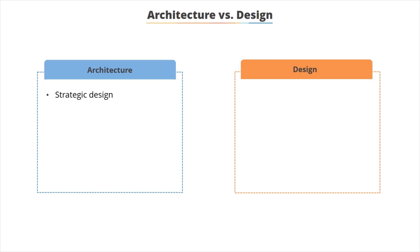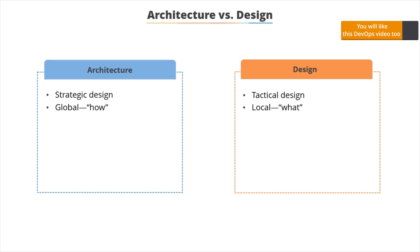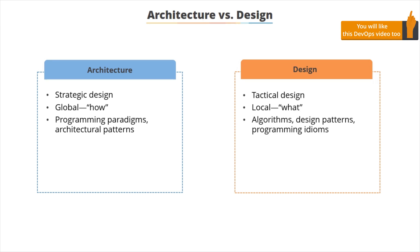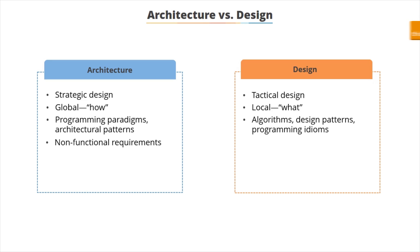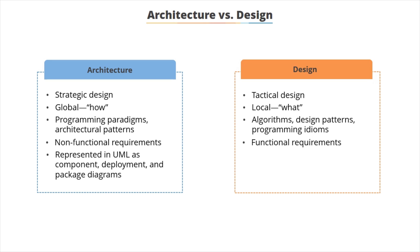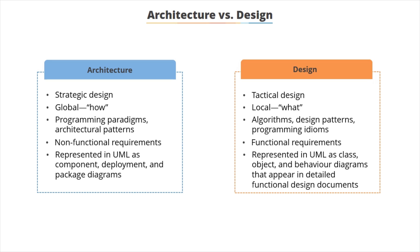Architecture is more strategic whereas design is tactical. The important word in architecture is 'how' — how do things fit together, rather than what do we use to connect things together? We look at programming paradigms and architectural patterns — high level patterns rather than algorithms and low level patterns. We're looking at non-functional requirements; architecture is a non-functional requirement — a statement of how these systems are going to communicate. Design is concerned with functional requirements: what does the system actually do? In UML, the diagramming language, certain diagrams are more associated with architecture than those used for design.